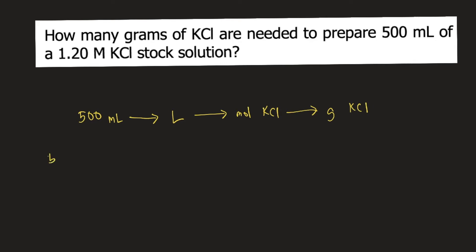So let's start with 500 mL. To convert that to liters, we know that 1 liter is equal to 1,000 mL. So you put 1 liter on top and 1,000 mL at the bottom, so mL would cancel. Now we have liters of solution.